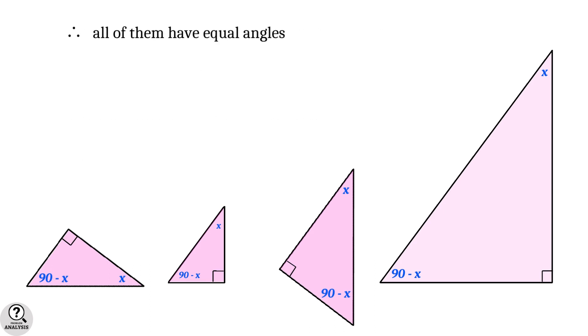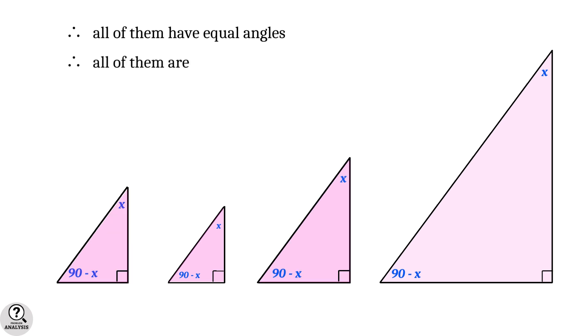Now compare all the right triangles we have. As you can see, all of them have an equal set of angles: x degrees, 90 degrees, and 90 minus x degrees. What does it mean? If two triangles have an equal set of angles, then they are similar triangles. That is, here all these four triangles are similar triangles.